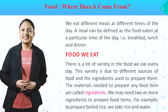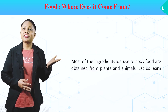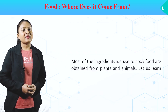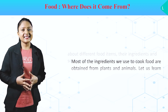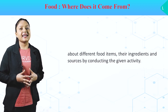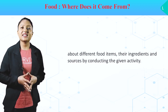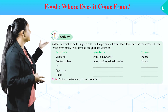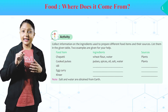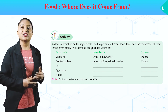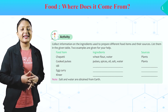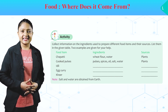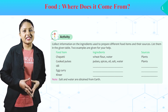Food kitnay bhi tarah ke ingredients se ban sakta hai? Most of the ingredients we use to cook food are obtained from plants and animals. Let us learn about different food items, their ingredients and sources by conducting the given activity. Let's start the activity. Collect information on the ingredients used to prepare different food items and their sources.